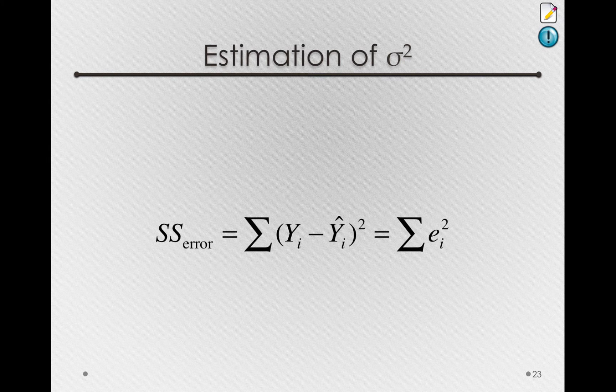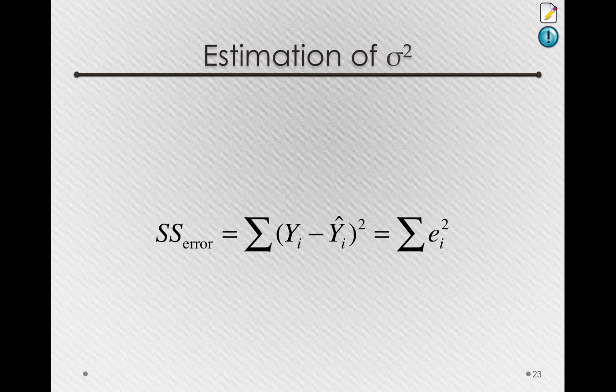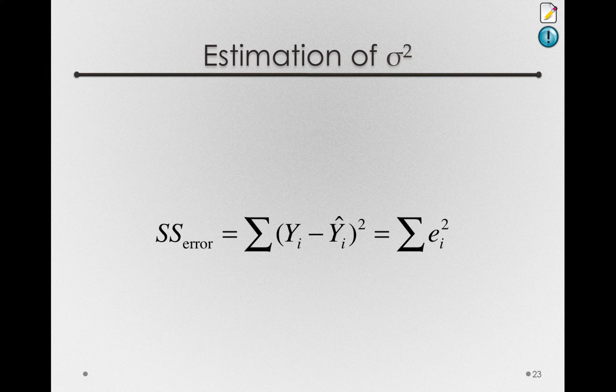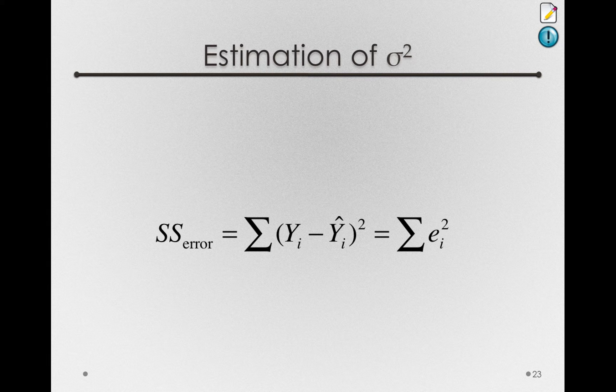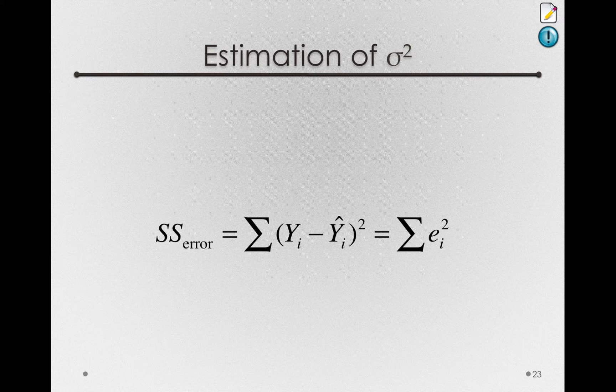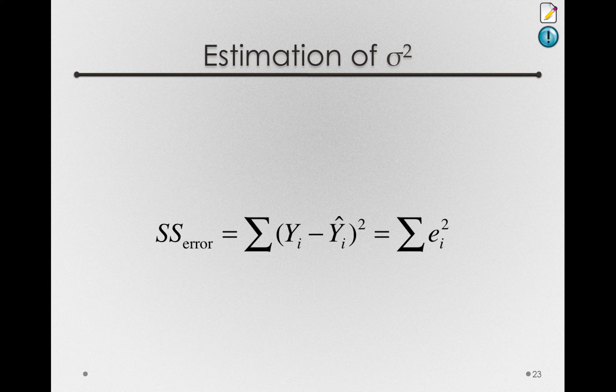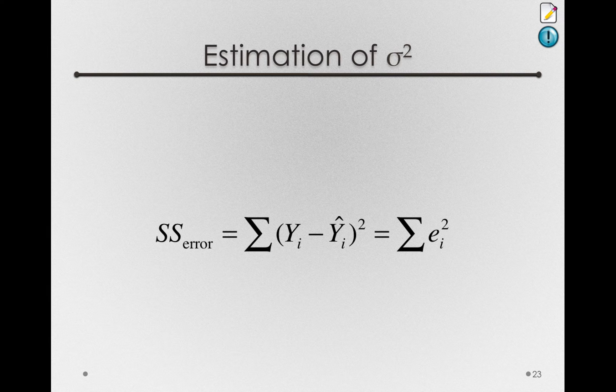Now the estimation of sigma square will carry forward in much the same way it did in our previous linear models. That is, the sums of squares for error will be formed on the basis of the deviation between the actual y-scores, the y i's, minus the y hat i's, squared. We can also write this as the sum of the e sub i squares.